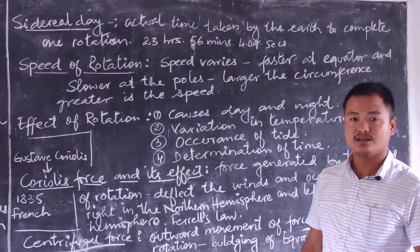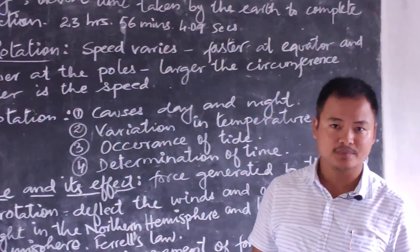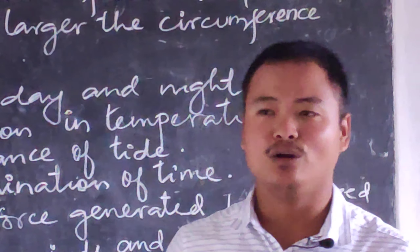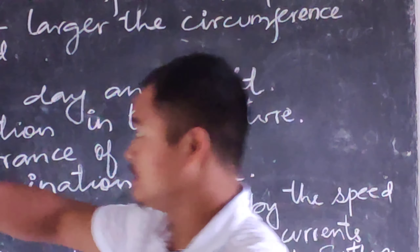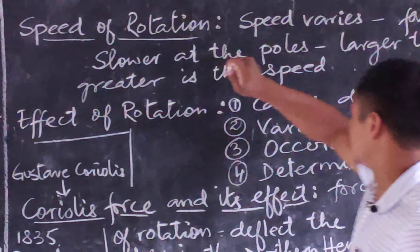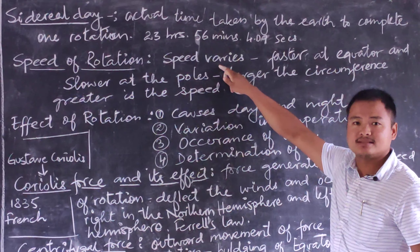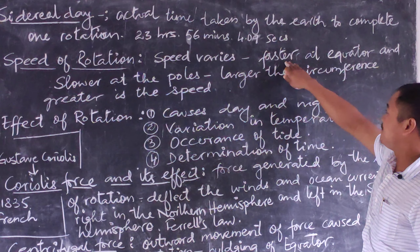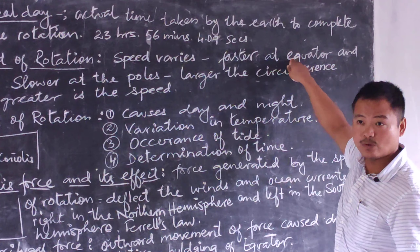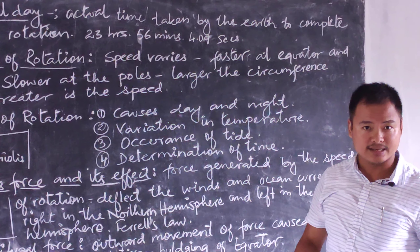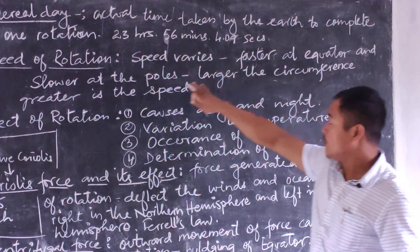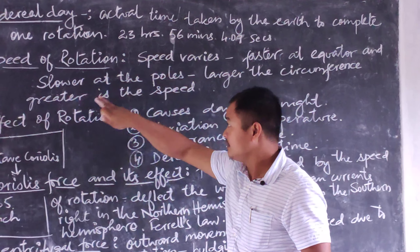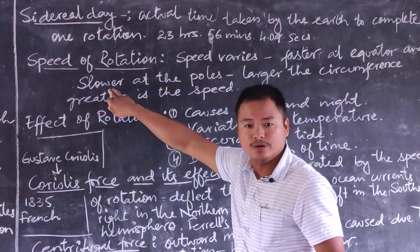Higher the latitude, lower is the speed; and lower the latitude, higher is the speed. The speed varies — it is much faster at the equator, which is at 0 degrees, a lower latitude. At the poles, which have the highest latitudinal value of 90 degrees, the speed is much slower.